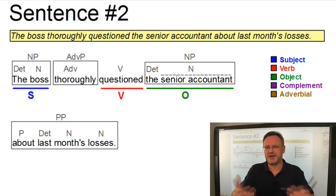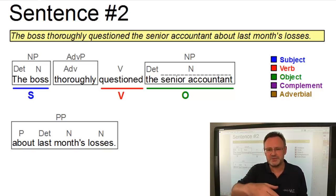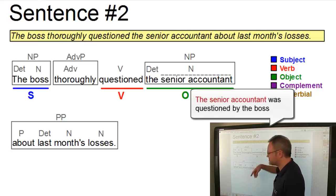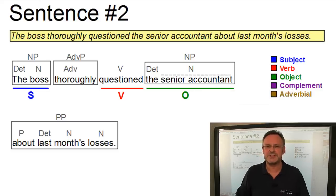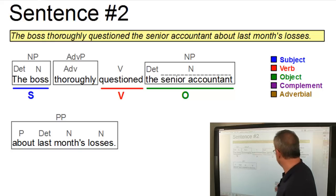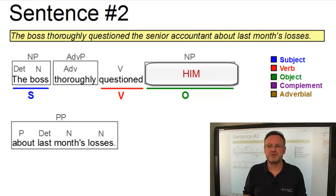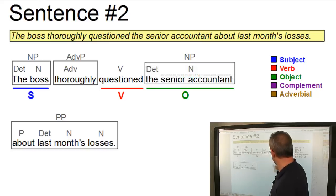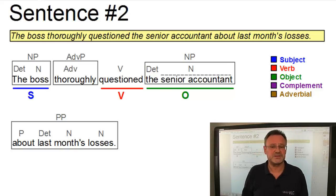Well, and again, we can apply tests. One test is again the passivization test. Now the object can become the subject of a corresponding passive sentence. The senior accountant was questioned by the boss. And this is a wonderful test for objects. Another test which works in our case is the substitution test, where we can replace the senior accountant by him, which is of course a pronoun in the object case. And this shows quite clearly that the senior accountant must be an object of this clause.